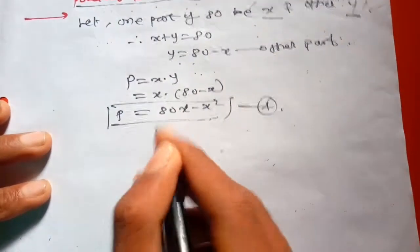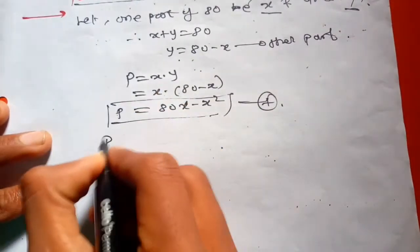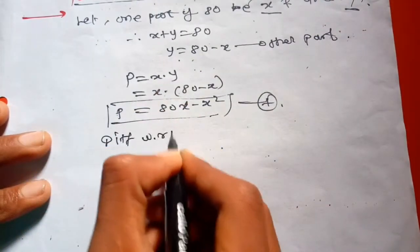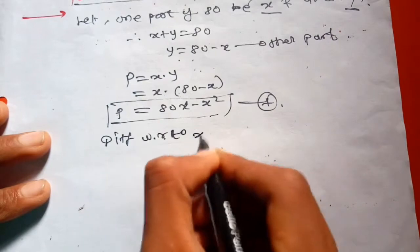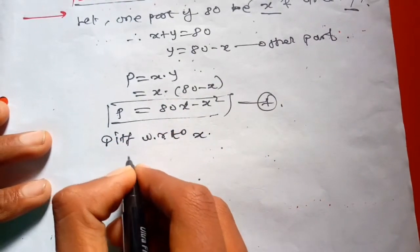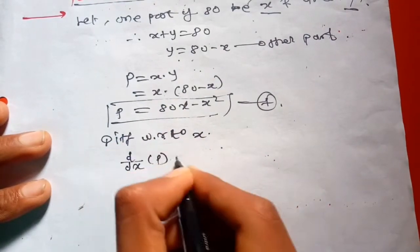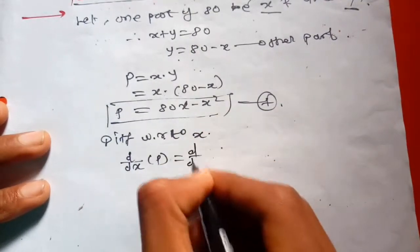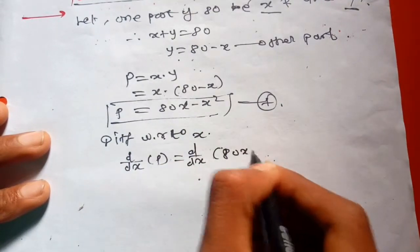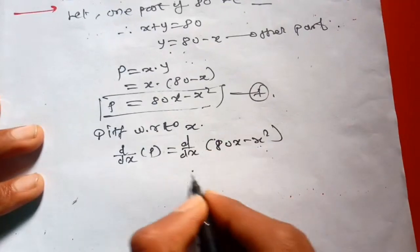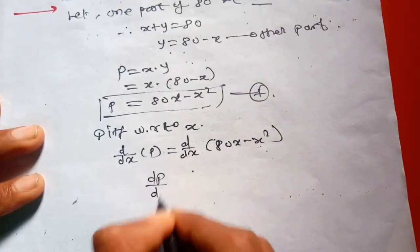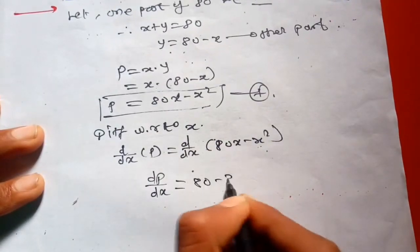Differentiate equation number one with respect to X. dP/dX is equal to 80 minus 2X.